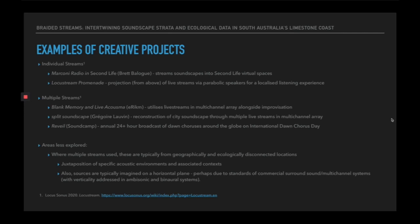Considering some areas less explored: where multiple streams are used, these are typically from geographically and ecologically disconnected locations. What we get often is the juxtaposition of specific acoustic environments and associated contexts, and also a kind of assumed horizontal plane between source and reproduction—perhaps due to standards of commercial surround sound and multi-channel systems—with verticality being addressed in ambisonic and binaural systems, although this could be argued to be changing more recently.